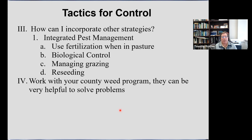Looking at integrated pest management: if you have livestock and a pasture as part of your place, look at maintaining fertilization, and make sure you are grazing that pasture properly to keep it healthy. In some instances you might be able to utilize biocontrol — the cooperative weed management areas often have help for you in locating biocontrol agents you could move onto your place. Managing grazing, looking at reseeding in some instances — do work with your county weed program because they can be very helpful in solving problems for you.